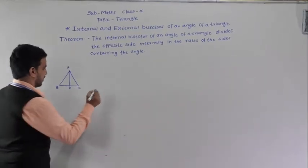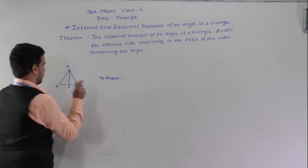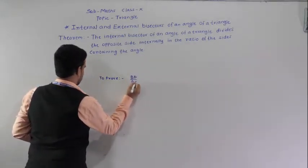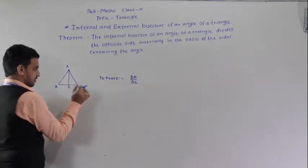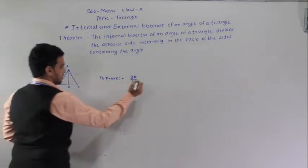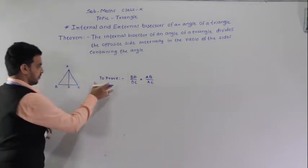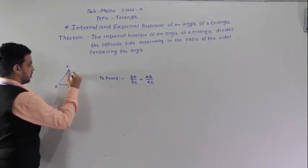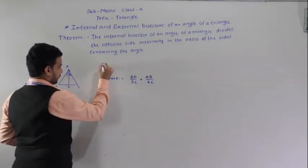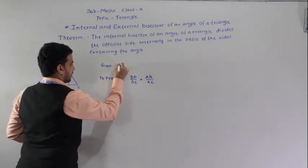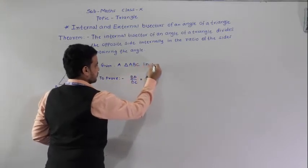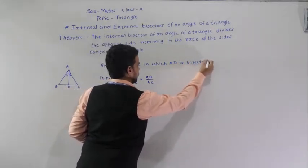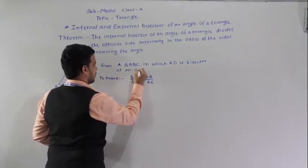Here AD is the bisector of angle A. We have to show that AD divides BC in the ratio BD by DC, so BD by DC is equal to AB by AC. AD is the angle bisector, so these two angles are equal. We name them angle 1 and angle 2, so angle 1 and angle 2 are equal. Given: triangle ABC in which AD is bisector of angle A.